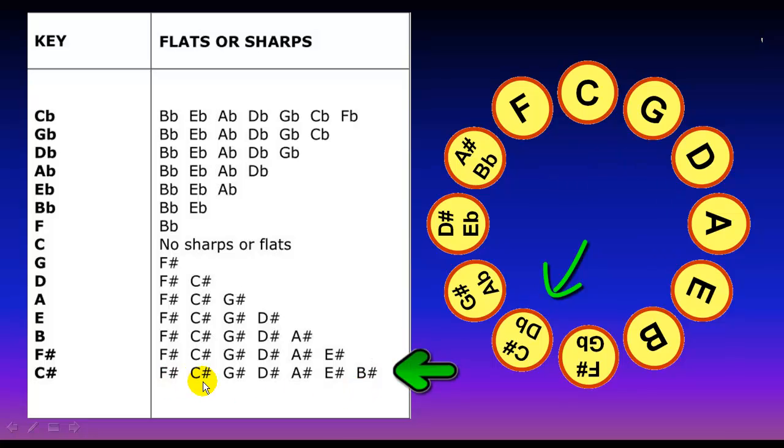So it is F, C, G, D, A, E, B. Circle of fifth in this order: F, C, G, D, A, E, B. Going clockwise, putting the C at the twelve o'clock position.